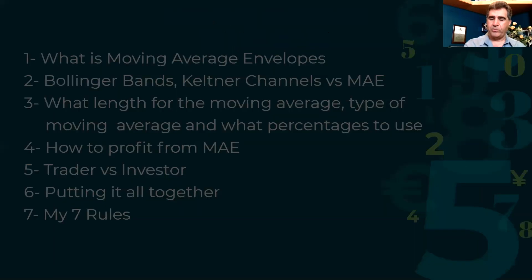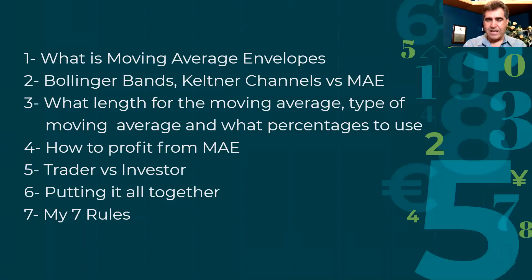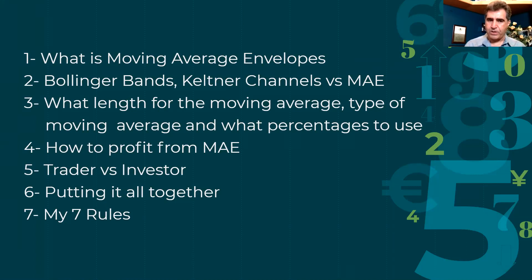What I'm going to accomplish today is discuss what moving average envelopes are, compare them with Bollinger Bands and Keltner Channels, look at what length of moving averages and move ranges are most appropriate, and what width or percentage we should use. Then we'll cover how to profit with moving average envelopes, compare advantages for traders versus investors, put it all together through charts, and summarize with my seven rules.